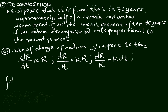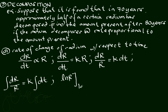Integrating, the integral of dR over R is equal to — let us bring out k, the constant — that is the integral of dt. Integrating, it will give us ln of R from lower to upper, that is the limit, is equal to k times t from lower to upper. That will be our working equation.